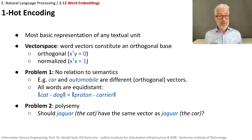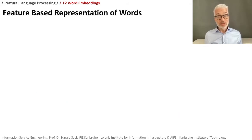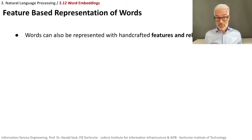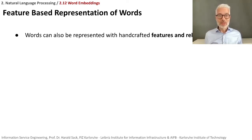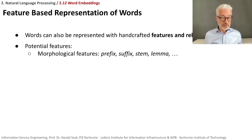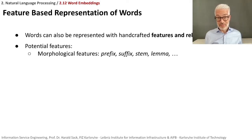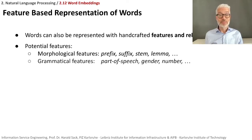Besides one-hot encoding, another way to represent words is a feature-based representation. Instead of one vector per word, we try to find features and relations between words and characterize them by those features. Potential features include morphological features — prefix, suffix, stem, lemma. For example, taking only the stem would show that 'car' and 'cars' share the same stem, which would be an indicator of similarity.